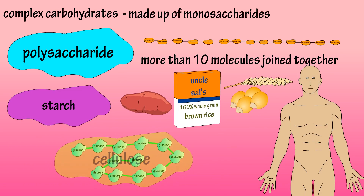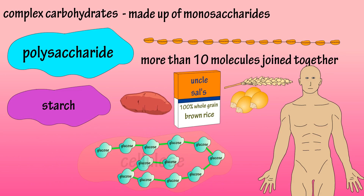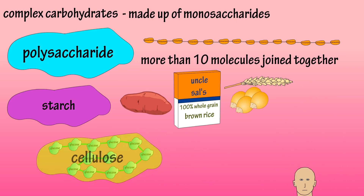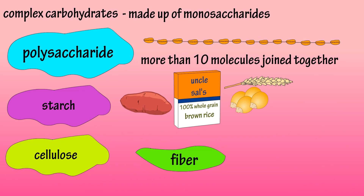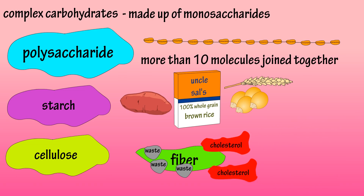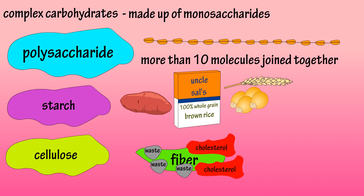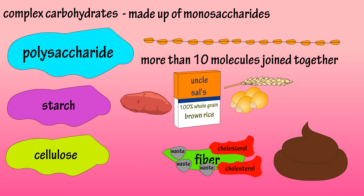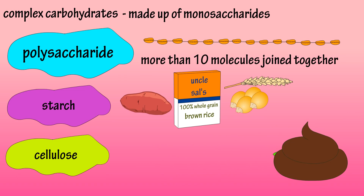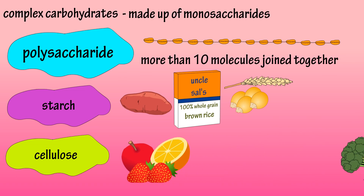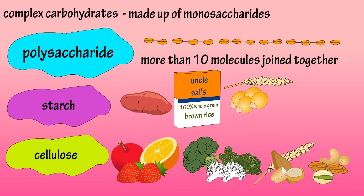Cellulose also consists of many bonded glucose units. However, their bonds are different than that of starches, and the body cannot break them down, so cellulose is a form of fiber. Cellulose fiber helps remove waste from the body, and it can also bind to excess cholesterol and sugar in the intestines and remove them in solid waste. Foods high in cellulose include fruits, veggies, grains, and nuts.